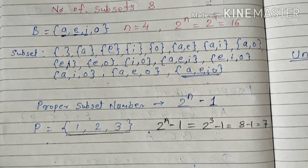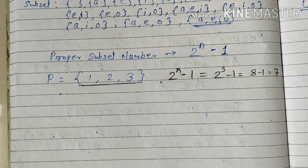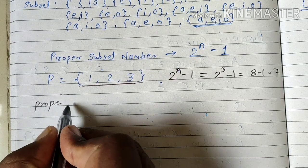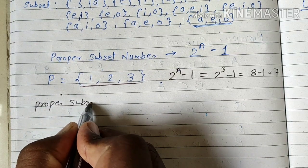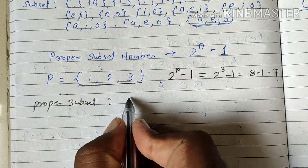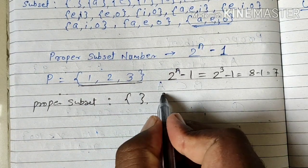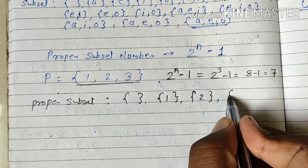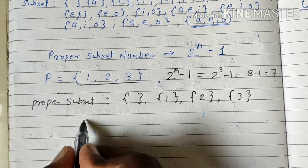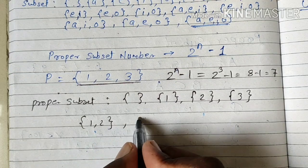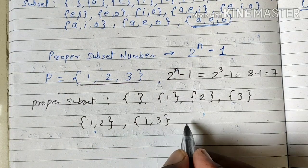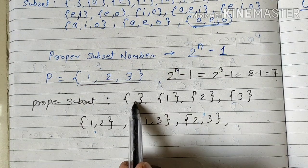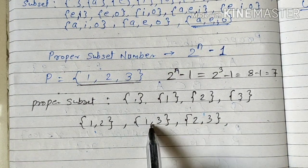So how to write all these proper subsets of P? First we will start with the empty set, then single elements we will take, then double elements we will take, combination with one. One, two, three, four, five, six, seven, that's it.